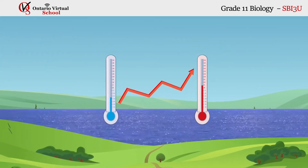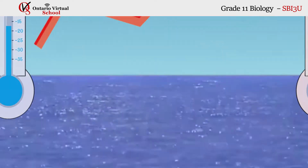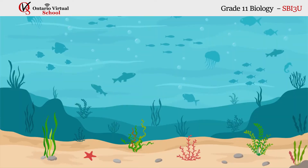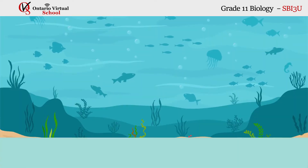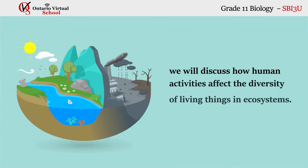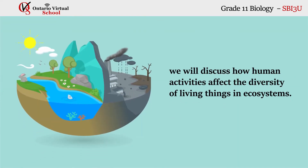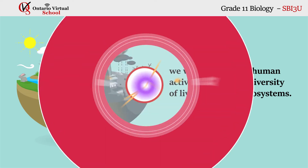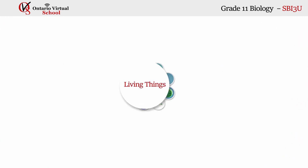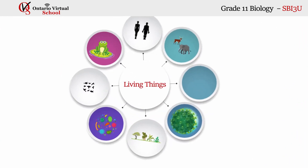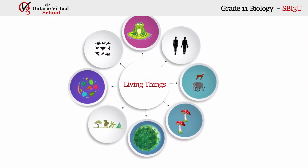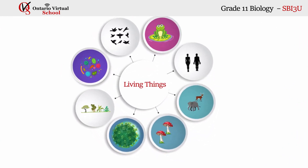In this unit, we will discuss how human activities affect the diversity of living things in ecosystems. You will also discover that all living things can be classified according to their anatomical and physiological characteristics.